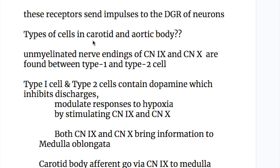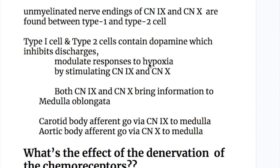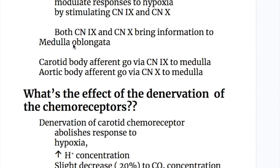Unmyelinated nerve endings of cranial nerve 9 (glossopharyngeal) and cranial nerve 10 (vagus) are found between type 1 and type 2 cells in the carotid and aortic bodies. The type 1 and type 2 cells contain dopamine, which inhibits the discharges and modulates responses to hypoxia by stimulating the glossopharyngeal and vagus nerves, both of which bring information to the medulla.